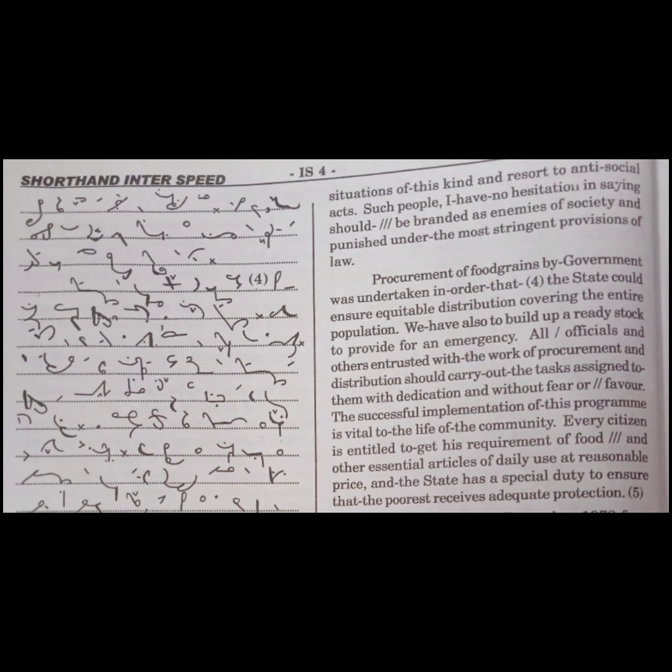All officials and others entrusted with the work of procurement and distribution should carry out the task assigned to them with dedication and without fear or favor. The successful implementation of this program is vital to the life of the community. Every citizen is entitled to get his requirement of food and other essential articles of daily use at a reasonable price, and the state has a special duty to ensure that the poorest receives adequate protection.